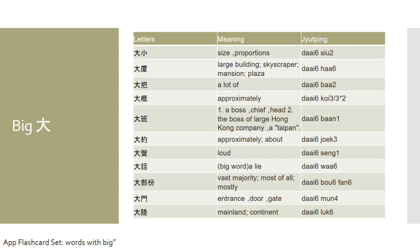If you're referring to the head boss of a large corporate, you could say daai ban, daai ban. This is actually rarely used, but sometimes when referring to a very, very big boss within a big corporation, you might say daai ban. Another word for approximately — besides daai koi — is daai, daai, which can be used interchangeably. So if you want to say approximately three feet, you could say daai koi sam chek or daai yuok sam chek — they mean the same thing.